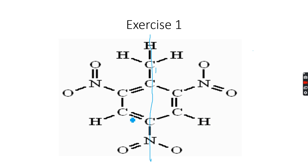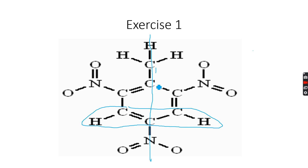One carbon atom with a hydrogen is here, another is here, and another is here. We take these two as one environment because both are at the same distance from this carbon atom and the same distance from the nitro groups — they are symmetric. So we get two peaks: one due to the CH3 group and one due to these two. The CH3 group will give a singlet integrated to three.